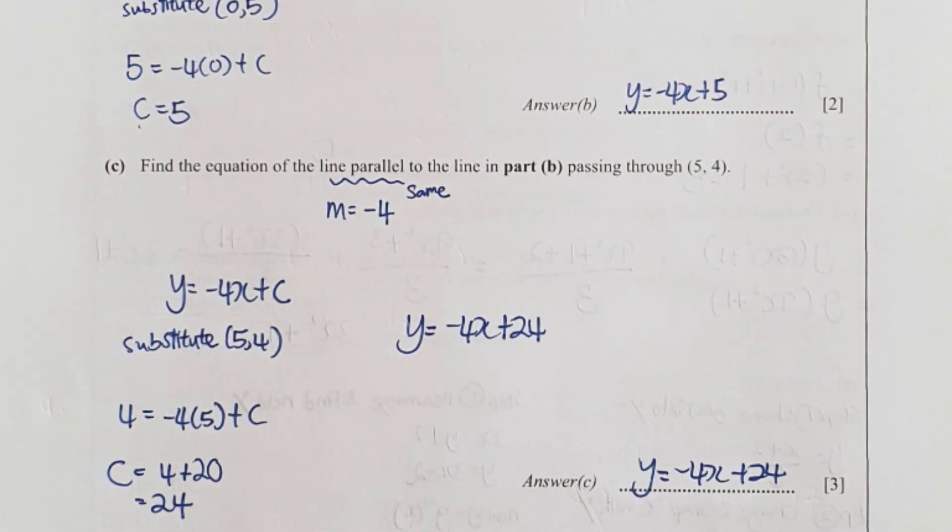For question c, the keyword here is parallel, which means that the gradient is the same. However, the thing that's different here is you substitute a different point into it and get your c as 24. So your final equation for this particular line will be y equals negative 4x plus 24.